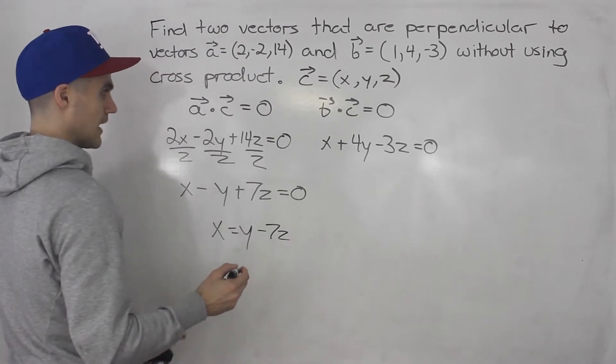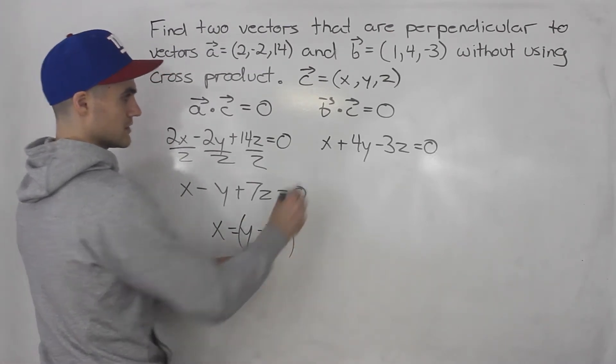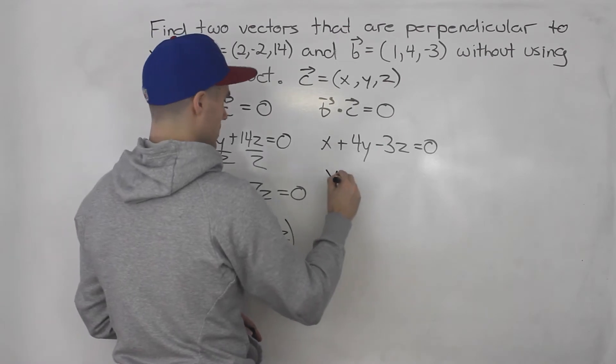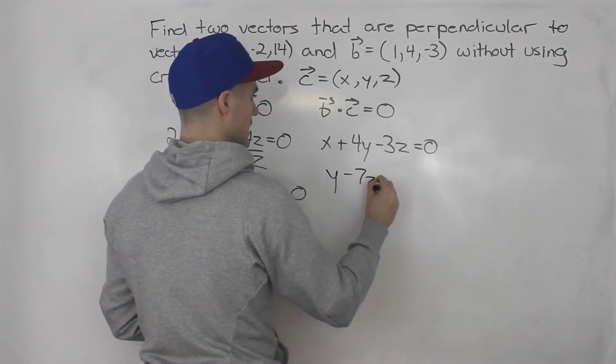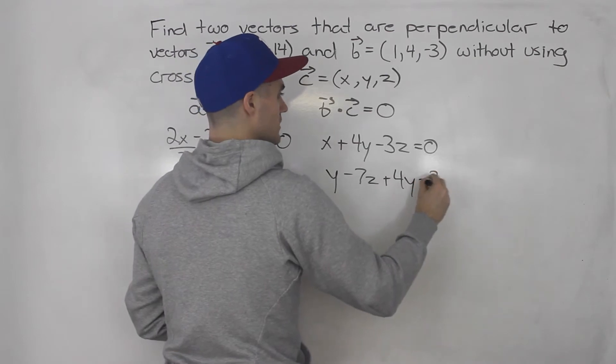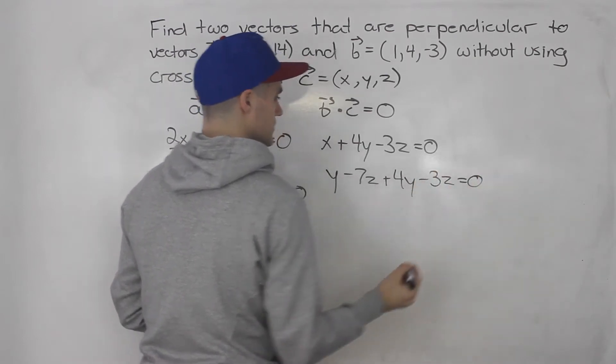So I'm going to plug this in here for X. So I got Y minus 7Z plus 4Y minus 3Z is equal to 0.